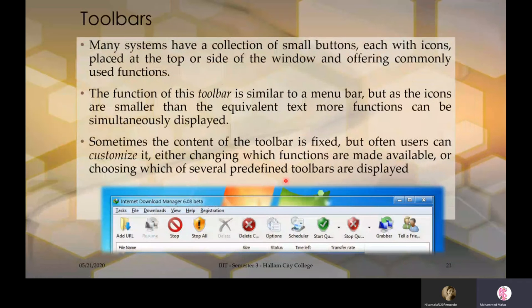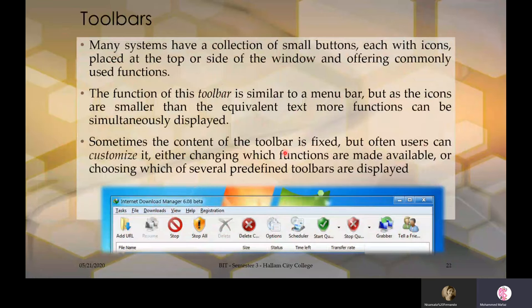Toolbars: today we have ribbons instead, but for learning purposes — many systems have a collection of small icons. The function of a toolbar is similar to a menu bar, but since icons are smaller than equivalent text, more functions can be simultaneously visible. Earlier Windows interfaces had an iconized version of the same menu — the toolbar gave the same important functionality as icons alongside the menu. Sometimes the toolbar content is fixed, but often users can customize it, changing which functions are available or choosing which predefined toolbars are displayed.